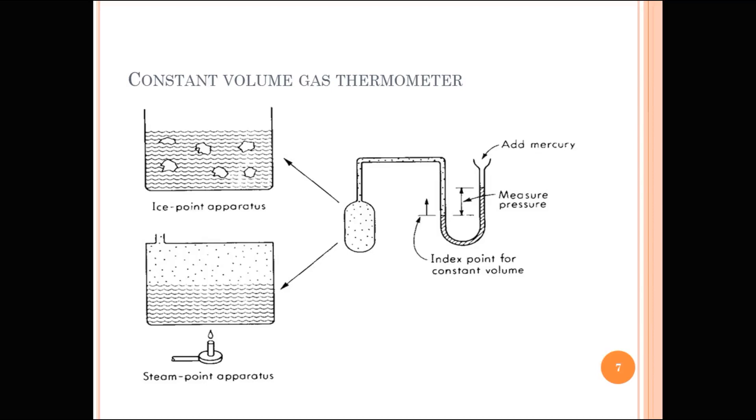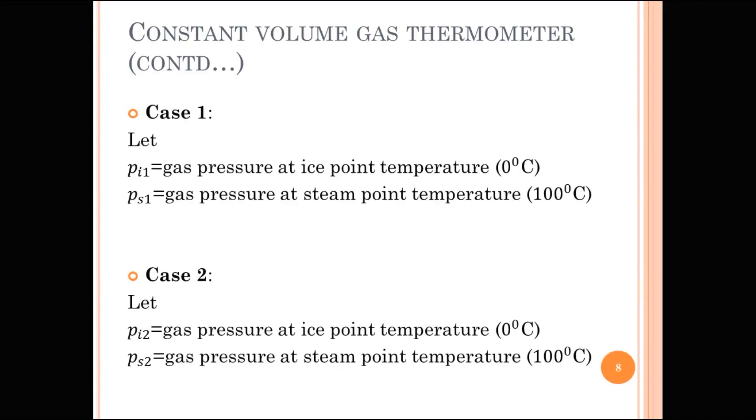Here, a thermometer is filled with a certain mass of gas. In order to make the volume to a desired value, mercury is added through this opening. This arrangement is used at both ice point temperature and steam point temperature. Ice point temperature means 0 degree Celsius and steam point temperature means 100 degree Celsius. Let the gas pressure at ice point temperature be Pi1 and that of steam point temperature is Ps1.